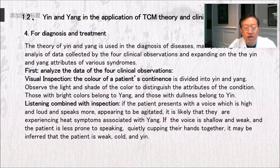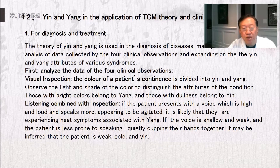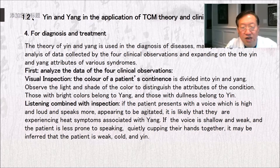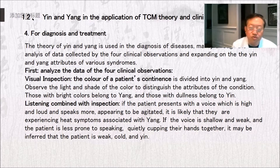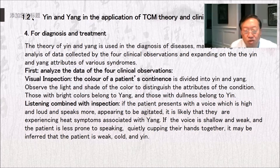Diagnosis and treatment: the theory of yin and yang is used to diagnose disease mainly through the analysis of data collected by the four clinical observations, expanding on the yin and yang attributes of various syndromes. First, analyze the data of the four clinical observations. Visual inspection: the color of a patient's countenance is divided into yin and yang. Observe the light and shade of the color to distinguish the attributes of the condition — those with bright colors belong to yang and those with dullness belong to yin.